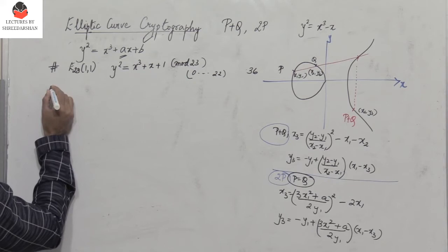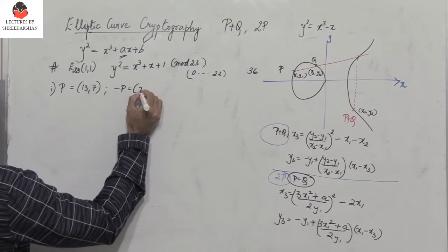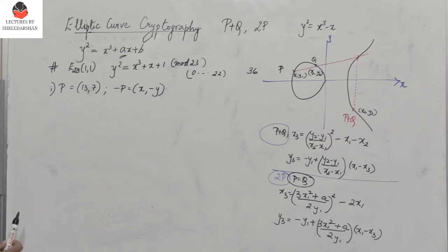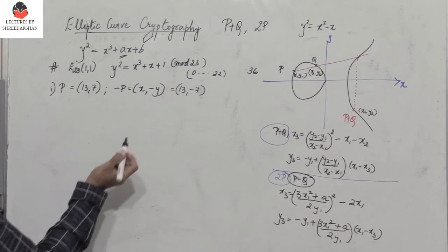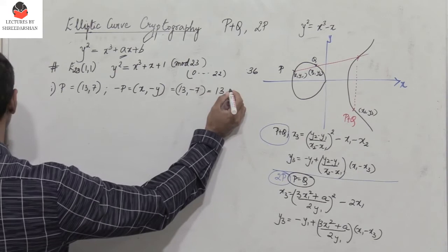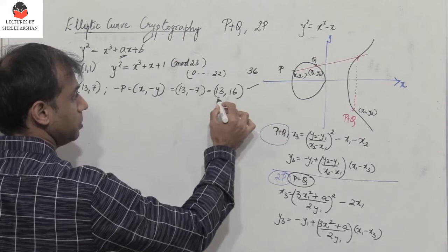The first part: if P equals (13, 7), what is minus P? We know minus P is calculated as (x, minus y) — the x coordinate stays the same and you negate the y value. So it would be (13, minus 7). But minus 7 is invalid in mod 23, so we add 23 to get its positive equivalent: minus 7 plus 23 equals 16. Therefore minus P equals (13, 16).